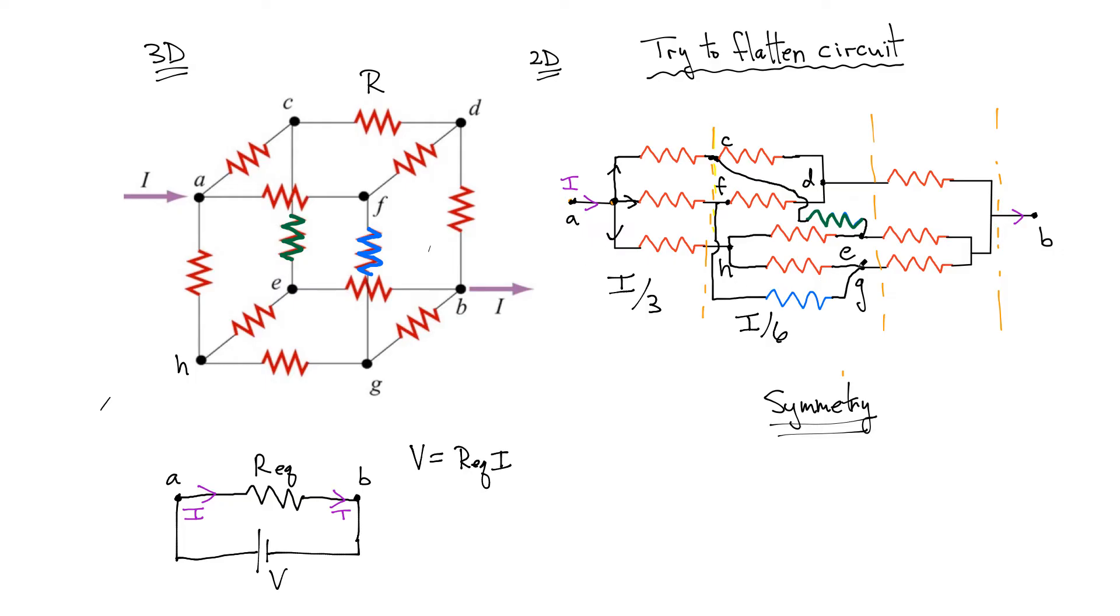Then these recombine, and everything combines into three branches that are in parallel, which also means that the current through each one of these final three branches has to be I over 3, since I'm combining two currents of I over 6. And then everything combines at the end, so that at point B I have the same current flowing out as I had flowing into junction A. So, that is the argument you make by symmetry.